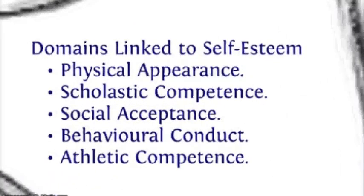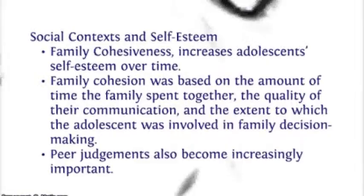We'll now move on to domains linked to self-esteem: physical appearance, scholastic competence, social acceptance, behavioral conduct, and athletic competence. Global self-esteem was correlated most strongly with physical appearance, a link that has been found in both the United States and other countries. Regarding social context and self-esteem, family cohesiveness increases adolescent self-esteem over time. Family cohesion was based on the amount of time the family spent together, the quality of their communication, and the extent to which the adolescent was involved in family decision-making. Peer judgments also became increasingly important.